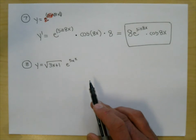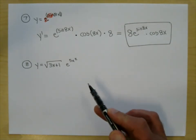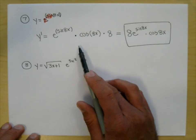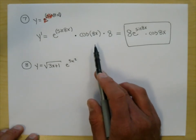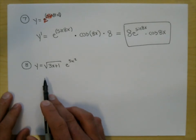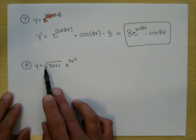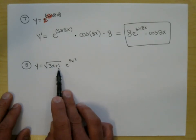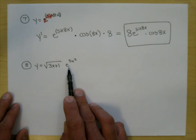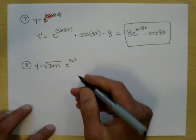Imagine doing these problems using the definition of the derivative with the difference quotient — it would be insane. Now that we have shortcuts, the chain rule really is a shortcut and we can find the derivative much faster. Now things get more complicated because we're going to mix chain rule with some of the other rules we know. Look at this next function — there's a product.